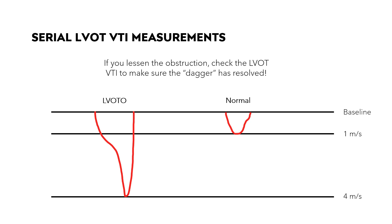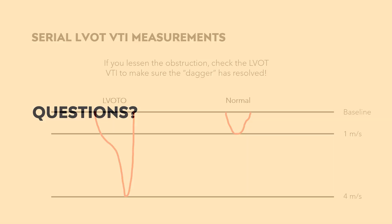In all of these cases, if you improve the LVOT obstruction, hemodynamics such as blood pressure should improve. I recommend repeating the echo to ensure the LVOT continuous wave Doppler is normalizing — meaning the peak velocity will decrease and the dagger appearance will resolve, indicating less dynamic obstruction. You may also check for resolution of the MR jet in the left atrium. Please share this video with your colleagues if you found it helpful.